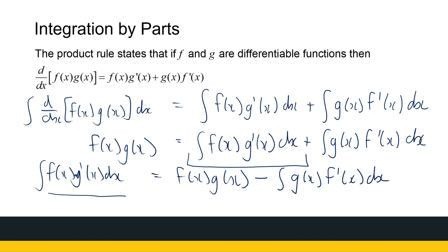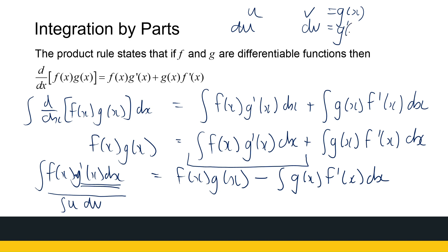All the f(x)'s and g(x)'s can become a bit messy and confusing, so I'm going to use functions u and v to simplify it, where du and dv are the differentials. The integral of u·dv is equal to u·v minus the integral of v·du. That's the formula we're going to use, and I'll show you how.